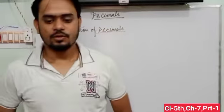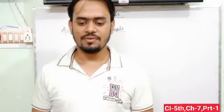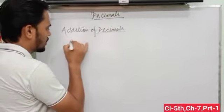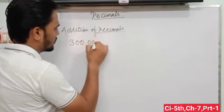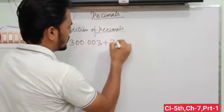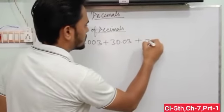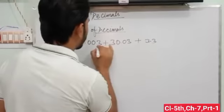Then to add decimal numbers, we have to follow some steps. First of all, take an example: 300.003 plus 30.030 plus 3.320. This is our question.